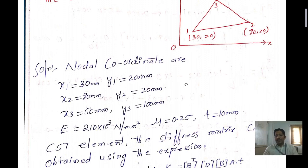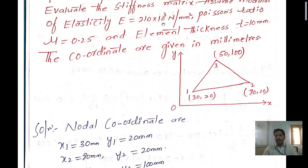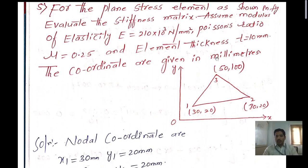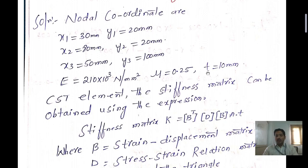The modulus of elasticity value is 210 into 10 to the power 3 Newton per mm square, and the Poisson's ratio is 0.25, and the thickness is 10 mm. With the help of the constant strain triangle element, we need to find out the stiffness matrix.